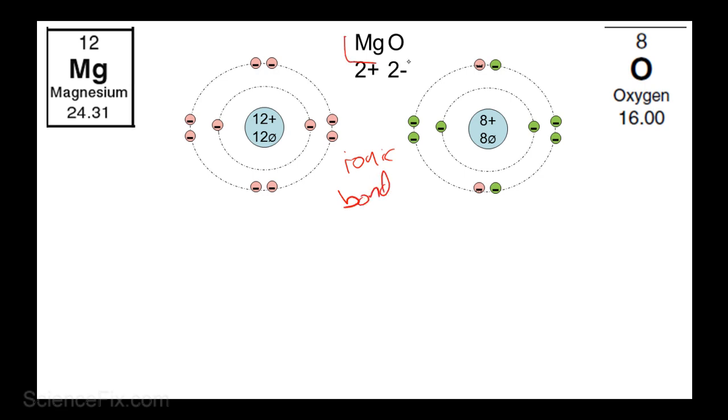And now the new compound is magnesium oxide. This is called an ionic compound.